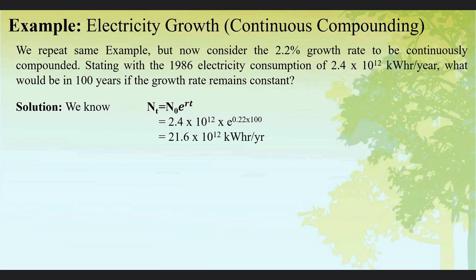That means if we use Nt = N0(1+r)^t, the result is 21.1 x 10^12 kilowatt hours, but if we use this formula, that is Nt = N0·e^(rt), this will be 21.6 x 10^12 kilowatt hours. So there is a very slight difference.